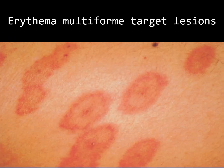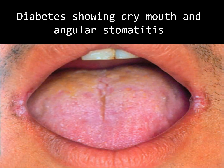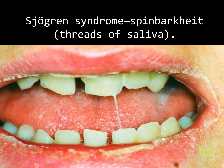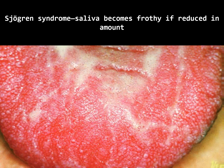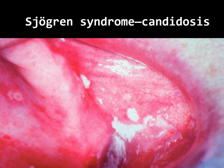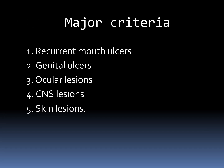Erythema multiforme target lesions and skin lesions. Diabetes showing dry mouth and angular stomatitis. Sjogren's syndrome: dry eyes, spin-bark threads of saliva. Saliva becomes frothy if reduced in amount. Denture-related stomatitis, candidosis, and parotid sialectasis associated with Sjogren's syndrome.